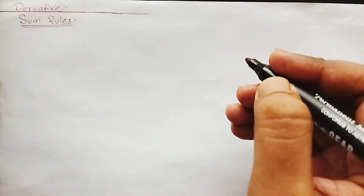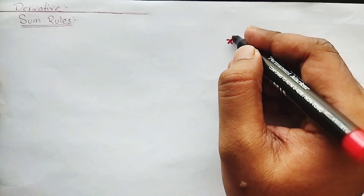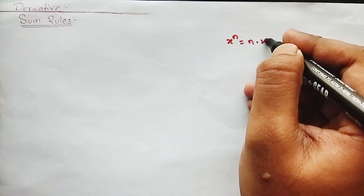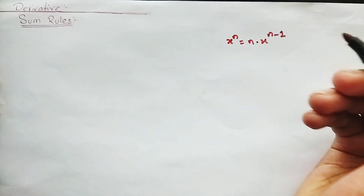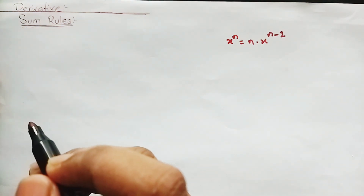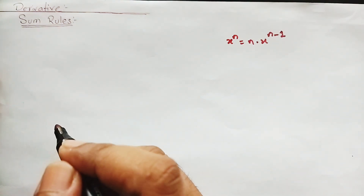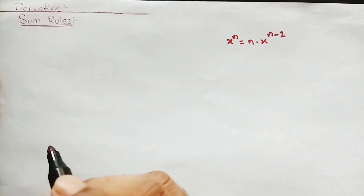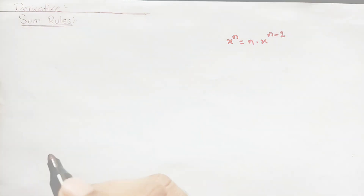The first thing I would like to let you know is that the derivative of x to the power n is n times x to the power n minus 1. I have selected a few numerical problems which I am going to solve in this video, so stay with me till the end and without any further delay let's get started.